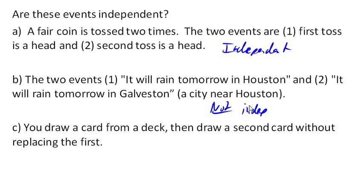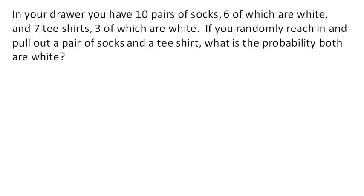How about if you draw a card from the deck and then draw a second card without replacing the first? This is again not independent, because the result of the first draw will affect the result of the second draw. For example, the likelihood of getting an ace on the second draw depends upon whether or not we got an ace on the first draw. But if two things are independent, then we can go ahead and use that multiplication idea.